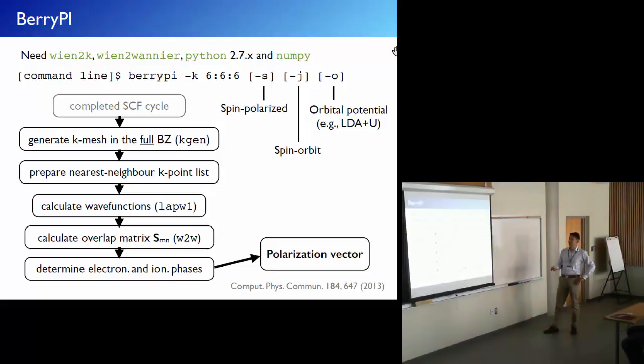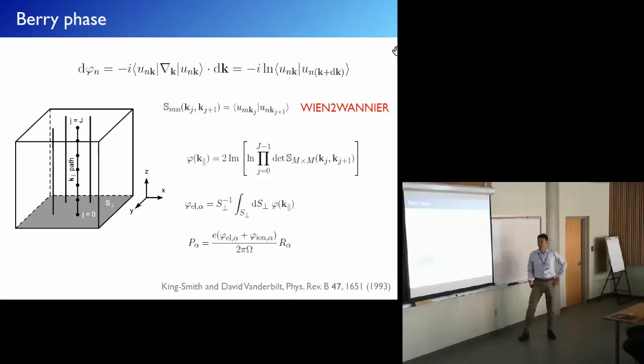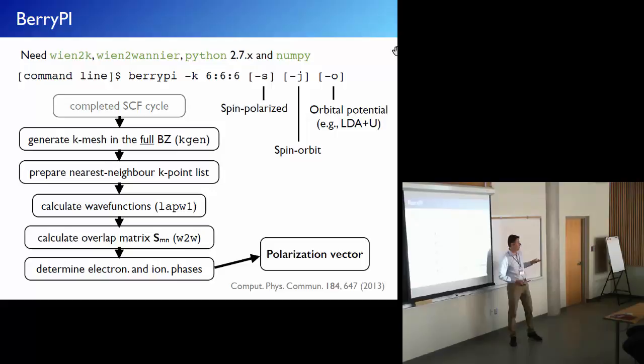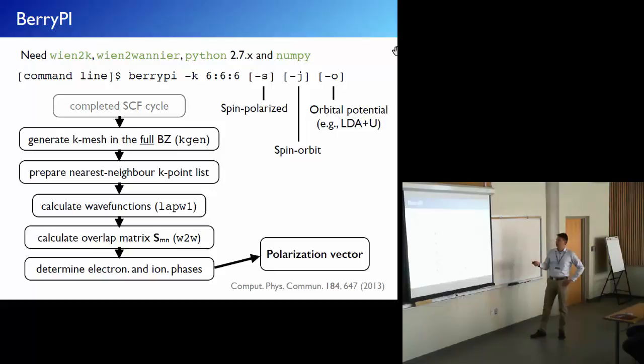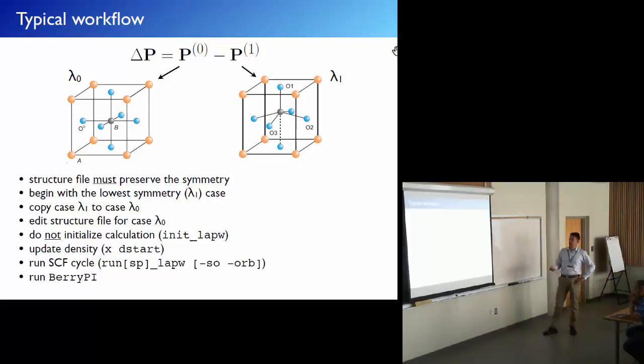The steps for running the BerryPi calculation are automatic. You execute berrypi -k, specifying the k-mesh discretization for evaluating the integrals. For a first starting point, it is a good idea to choose the same k-mesh used in the self-consistency calculation, then check convergence. You can also add parameters for spin-orbit coupling, spin-polarized, or orbital potential calculations. At the end, you get the polarization values in tables.